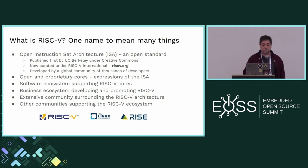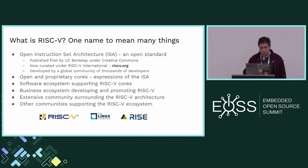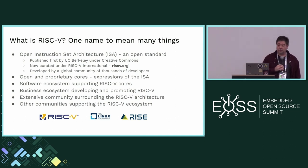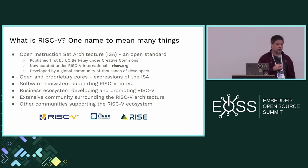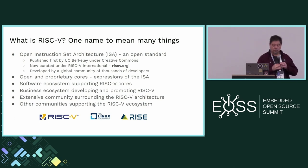RISC-V is emerging as the standard that it is. RISC-V can support both open and proprietary cores. The core is just the expression of the ISA. The ISA remains open even though it does support proprietary cores as well. There are a number of open and proprietary cores out on the marketplace right now, and a number of groups forming to create both kinds.